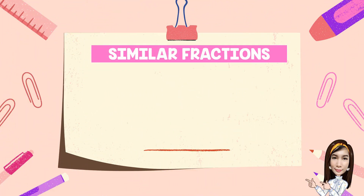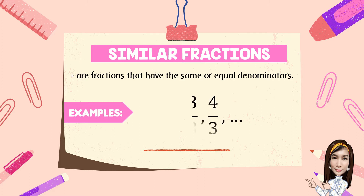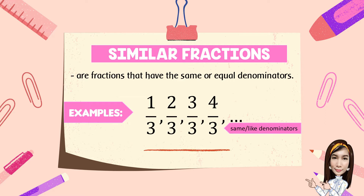Similar fractions are fractions that have the same or equal denominators. The examples are one-third, two-thirds, three-thirds, four-thirds, and so on. As you noticed, we have the same or like denominators.